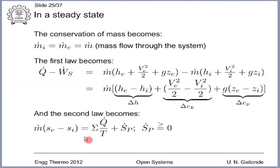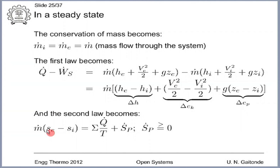The second law becomes m dot into (s_e minus s_i) equals summation of Q dot by T plus S dot P, with the second law dictating that S dot P is greater than or equal to zero. If Q dot by T is zero, the control volume is adiabatic; if S dot P is zero, the processes are reversible; and if m dot(s_e minus s_i) is zero, the inlet and exit states are isentropic. You can have isentropic inlet and exit states without the system being adiabatic or reversible.